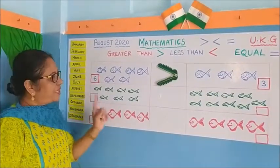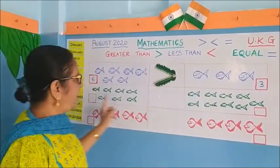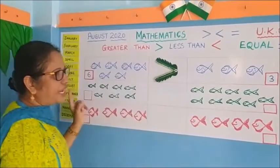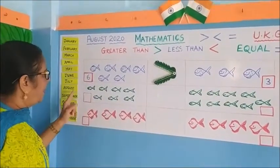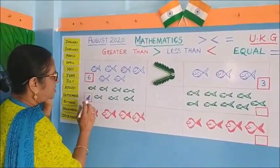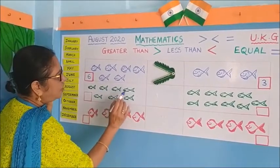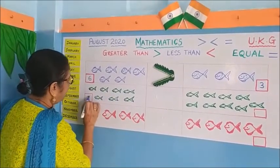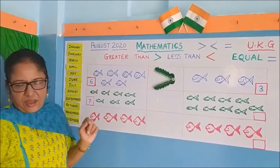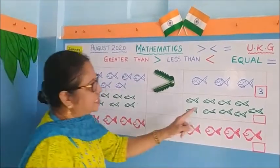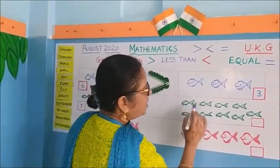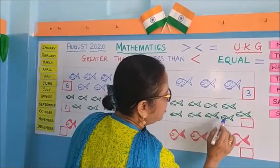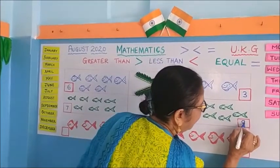Now the second green color fishes we have. Shall we count the number of green fishes in both the tanks? In this tank, let us see how many fishes are there: one, two, three, four, five, six, seven. Let's write seven. Now in this tank, how many fishes are there? One, two, three, four, five, six, seven, eight, nine. Nine.